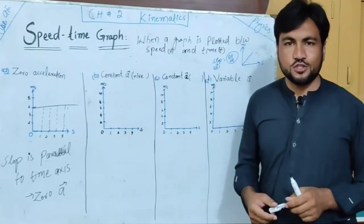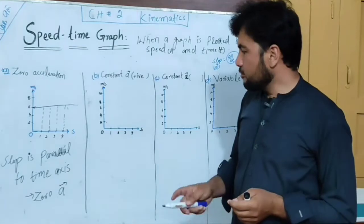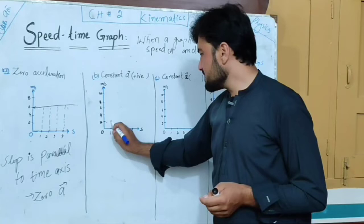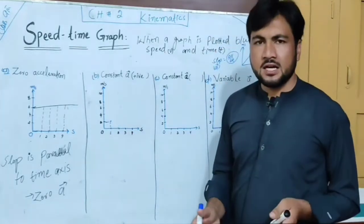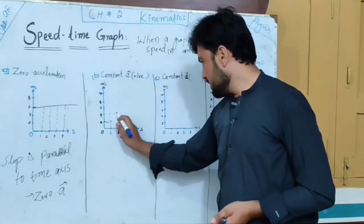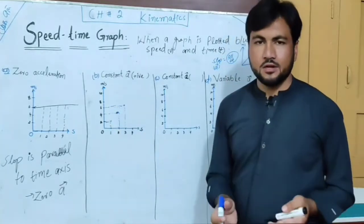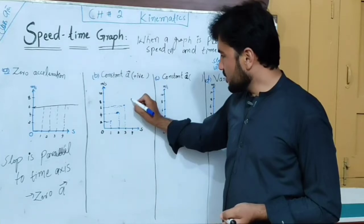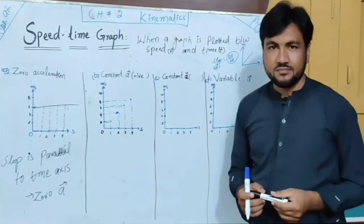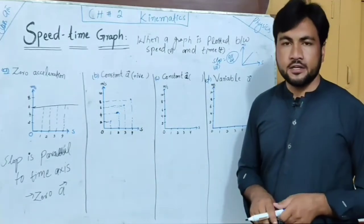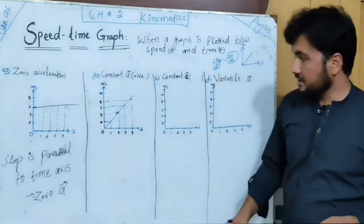We are trying to understand the concept of constant acceleration. For example, at the first second the speed is 2 meters per second, and it increases. At the second second, the speed is 2 meters per second more. Similarly, the speed increases by 2 meters per second each interval. Speed increases by an equal amount at equal intervals of time. Connecting the points gives a straight line.